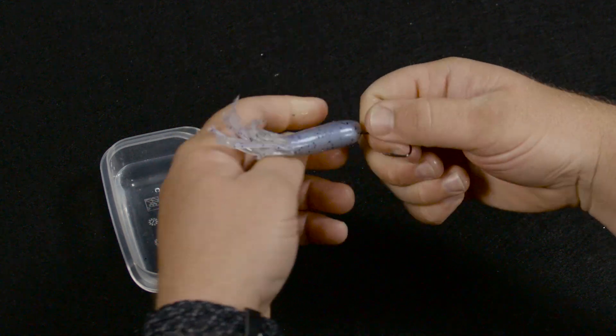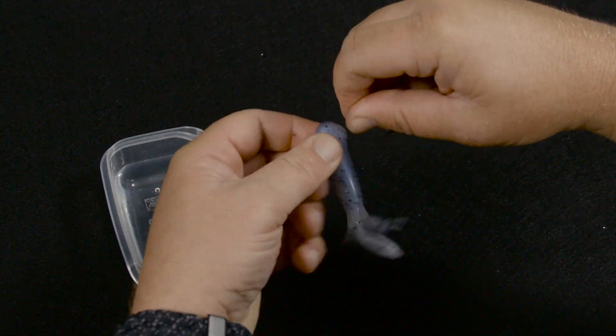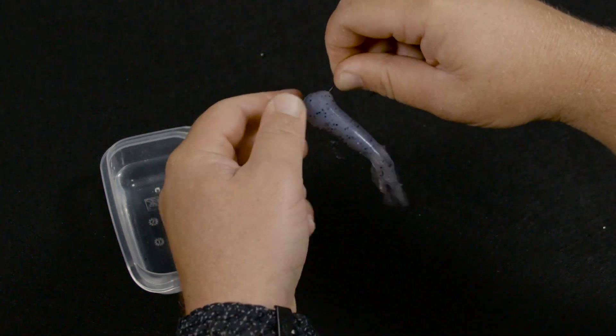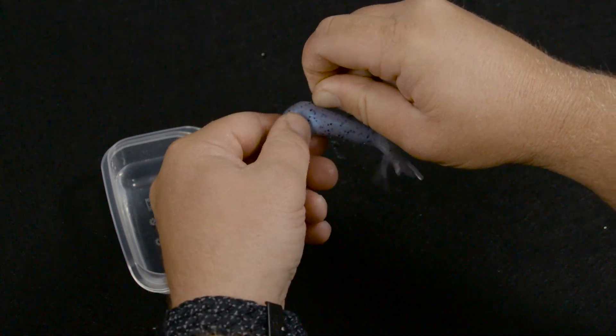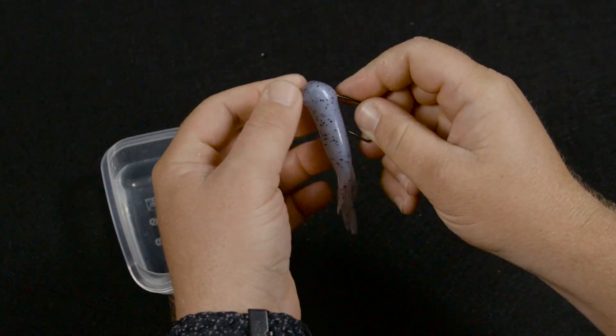Bring it all the way down, then you're going to want to flip it, kind of rotate it so the hook point goes towards the tail of the tube. Then right there you're going to want to try to pop the eye through the plastic.